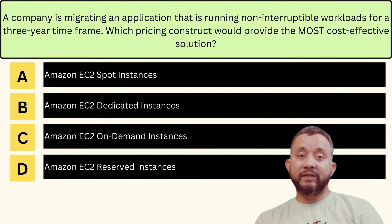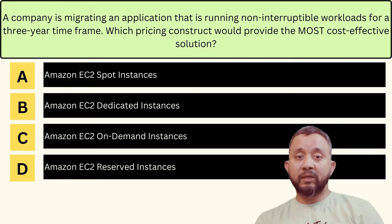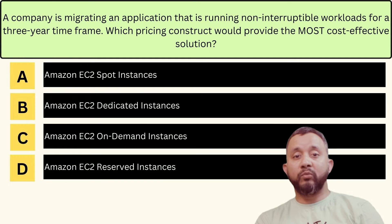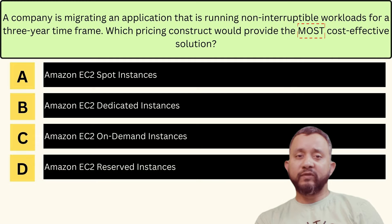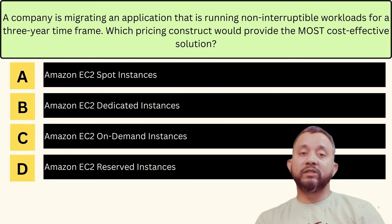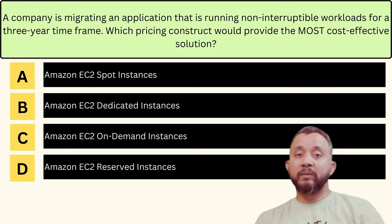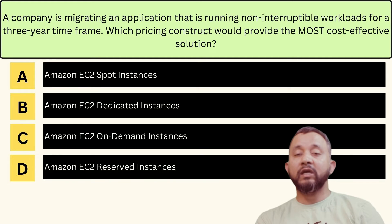Here is an example from the AWS Cloud Practitioner exam: 'A company is migrating an application that is running non-interruptible workloads for a three-year time frame. Which pricing construct would give you the most cost-effective solution?' Focus on the keyword 'most' here. All of the given options might be right, but to get the answer correct you need to choose the best suitable option offering the most cost-effective solution. Also try to find out whether the question is looking for a solution to improve latency, optimize cost, or implement high availability or fault tolerance.